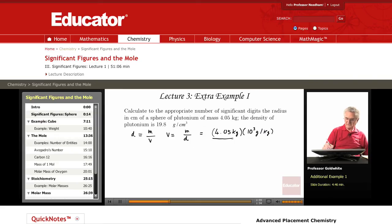divided by 19.8 grams per cubic centimeter. And that comes out to be roughly 227 cubic centimeters.